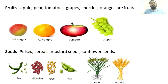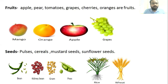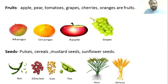Next are fruits. We all know that we eat fruits of different plants like apple, pear, tomatoes, grapes, cherries, and oranges. Next are seeds. We also consume seeds of different plants like pulses, cereals, rice, wheat, mustard seeds, and sunflower seeds.